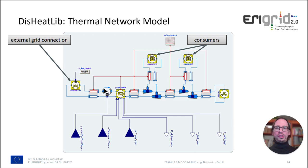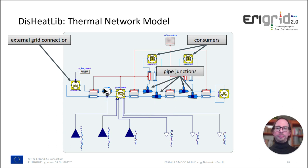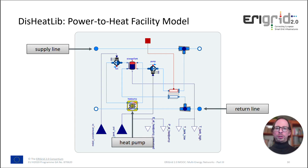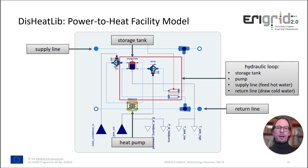Similarly, it allows quite intuitive modeling of the power-to-heat facility. You have component models for the supply line, the return line, the heat pump, and the storage tank. It's also quite intuitive to model hydraulic loops — for example, the pump that moves hot water from the heat pump to the storage tank, and similarly the hydraulic loop where the pump moves hot water from the storage tank to the supply line of the thermal network while drawing cold water from the return line.